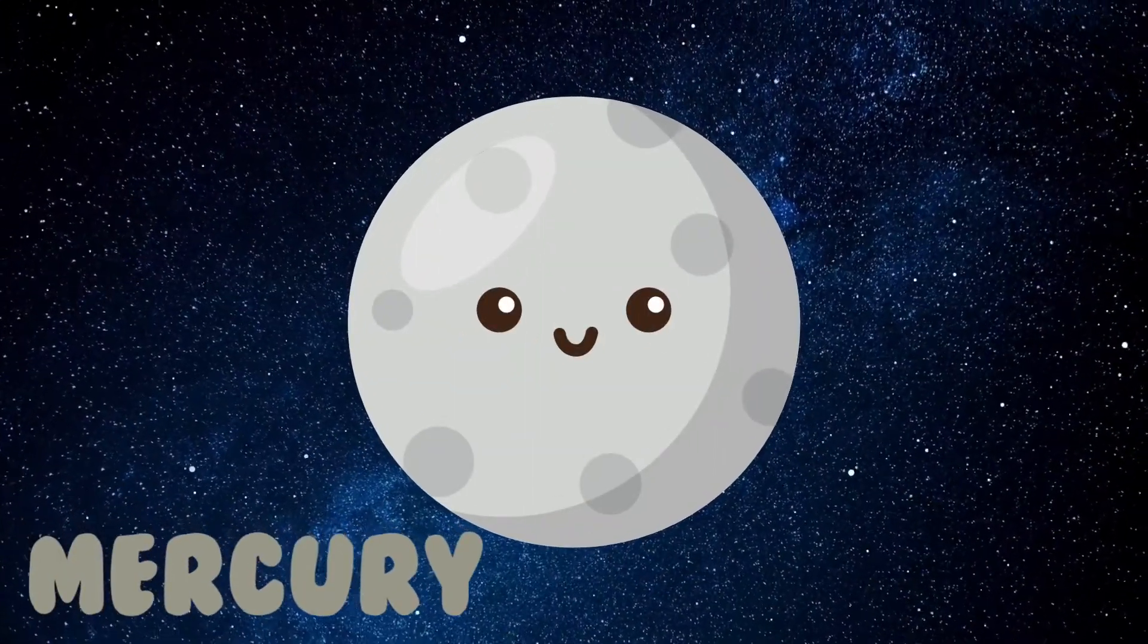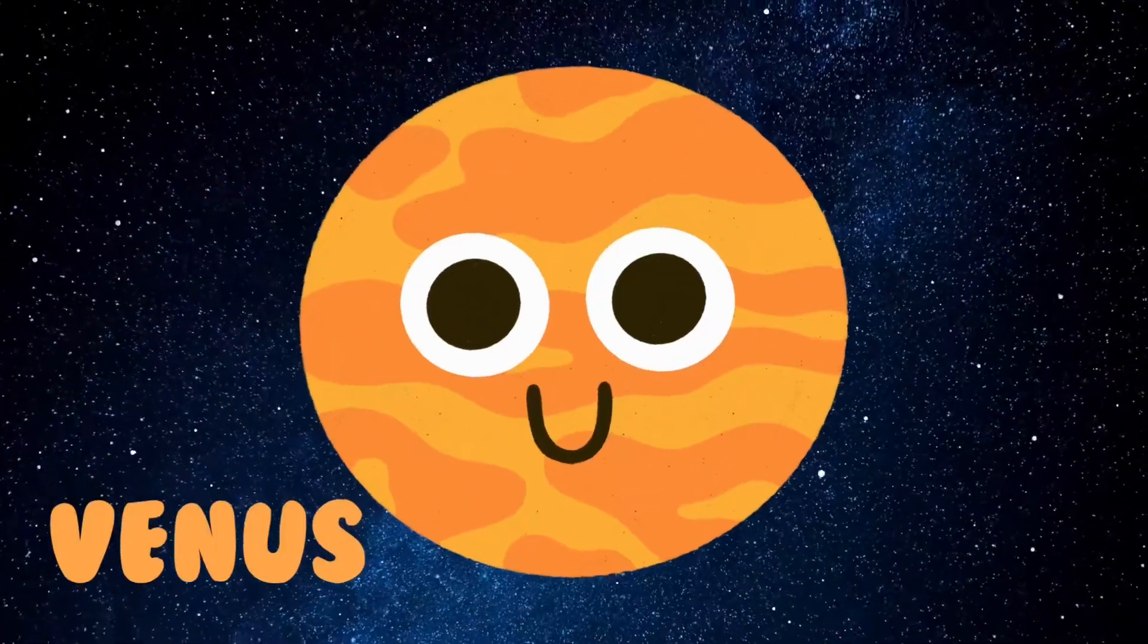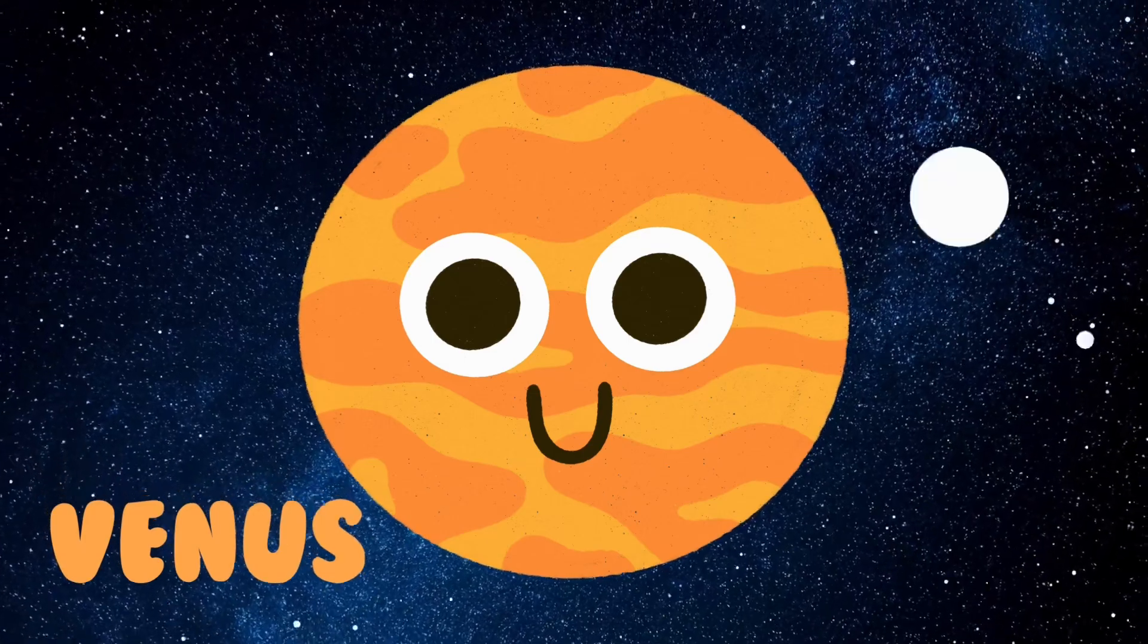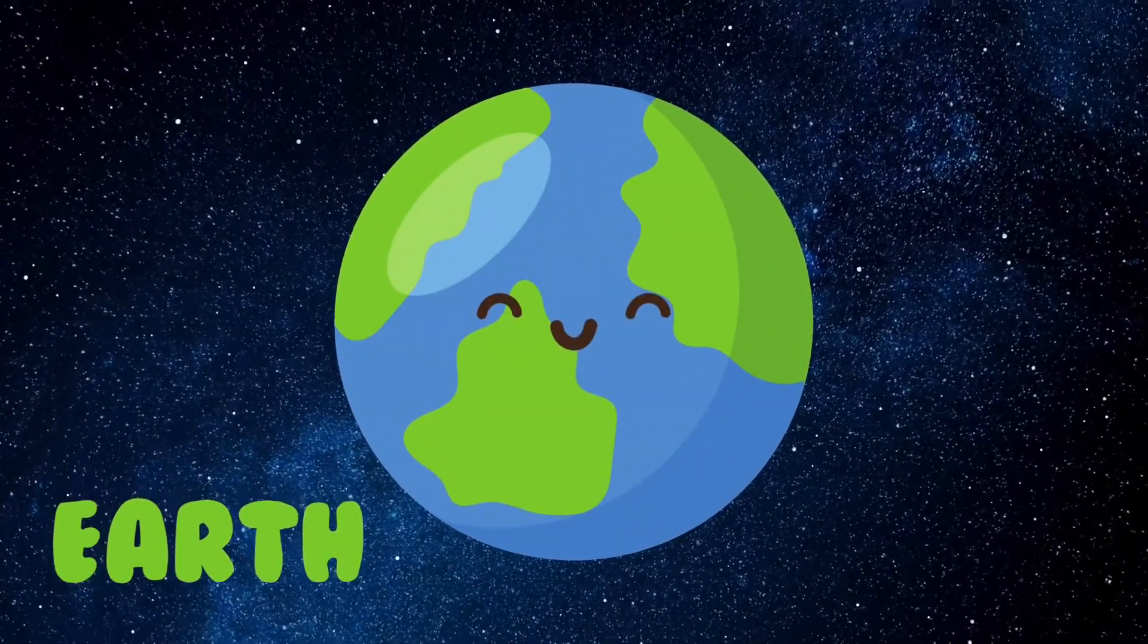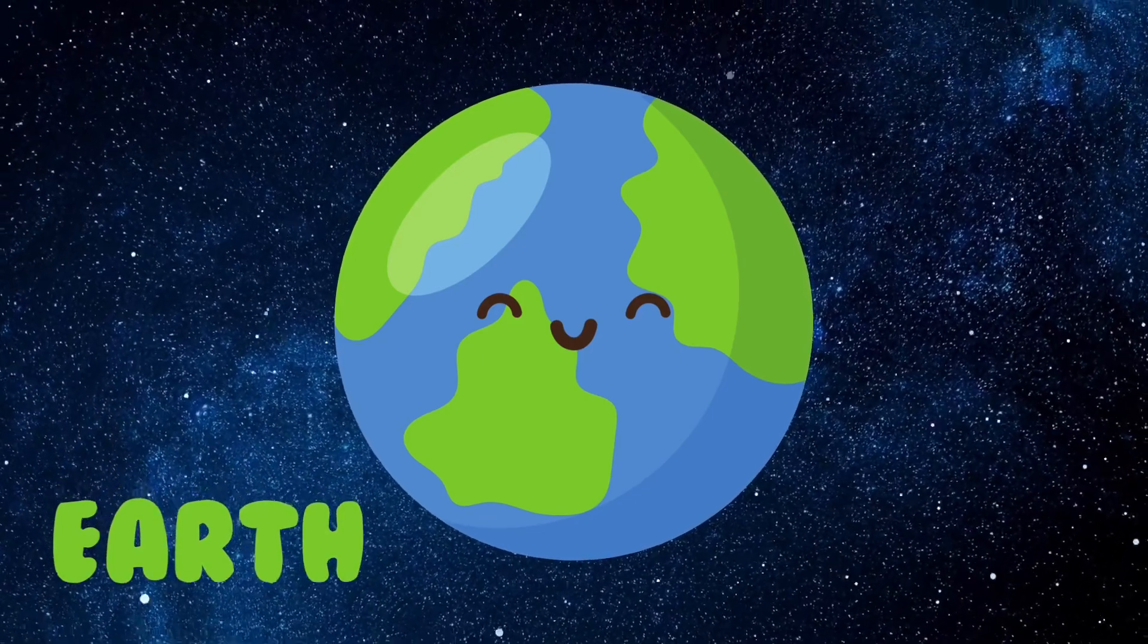Mercury is the smallest planet. Venus is the same size as Earth. Earth is our home. It's full of life and a very, very lovely place.